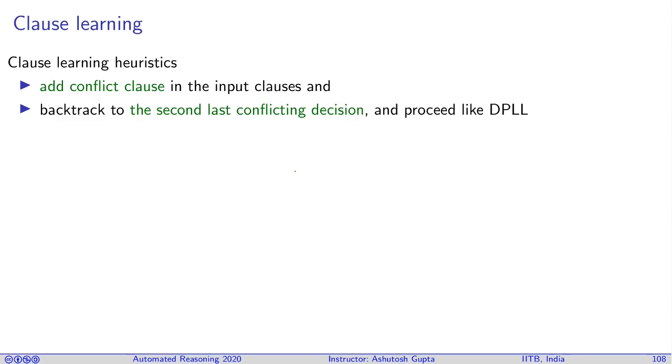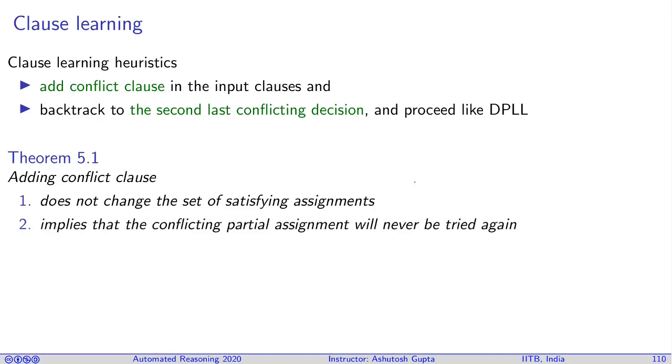Let's suppose in a conflict clause 3 literals showed up, and wherever the last decision was, you just go to that point, not the latest decision, but the last decision that appears in the conflict clause. So what is the benefit of doing this? This seems a very strange process. So let's look at some properties of conflict clauses. One first thing to observe is that by adding a conflict clause, it does not change the set of satisfying assignments. Second thing to observe is it implies that the conflicting partial assignment will never be tried again.